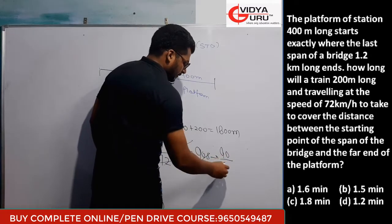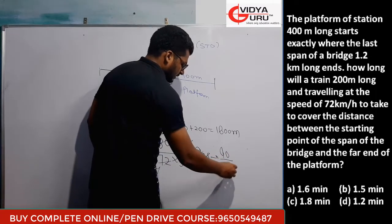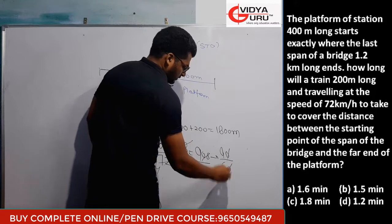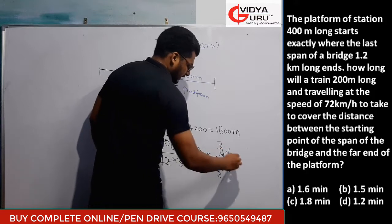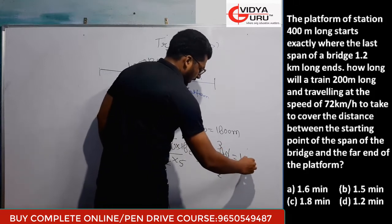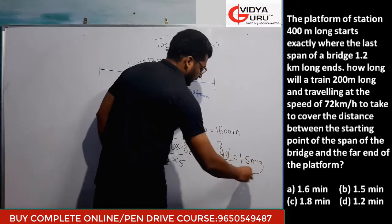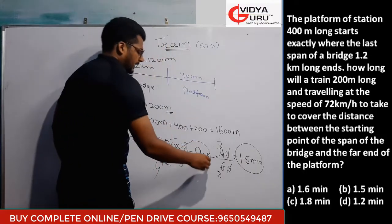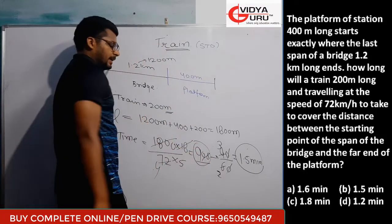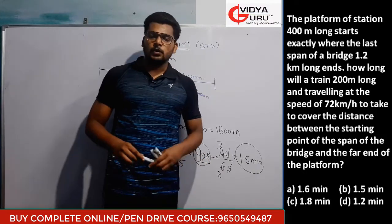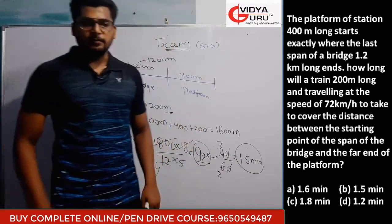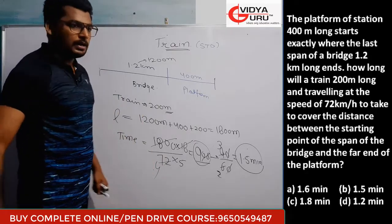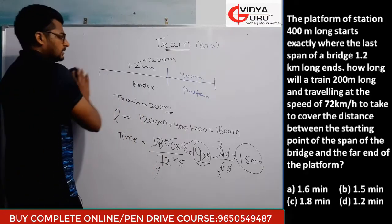Time = 1800 / 20 = 90 seconds. 90 seconds can be written as 1.5 minutes. According to the options, 1.5 minutes is the correct answer.